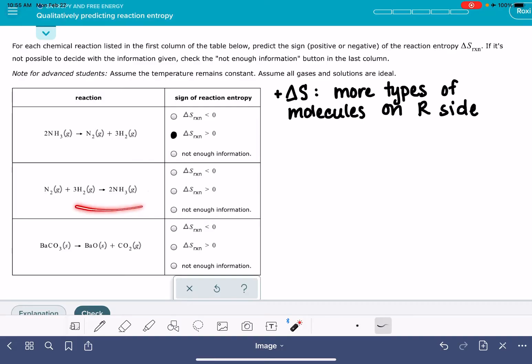Here's another really good example. In this reaction, we have two types of molecules on the left, but only one type of molecule on the right. So this one, we're decreasing the number of types of molecules, so that would be a negative entropy.